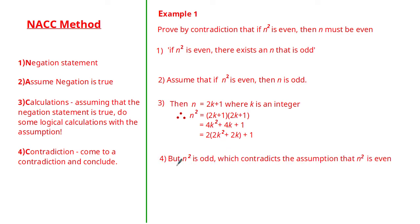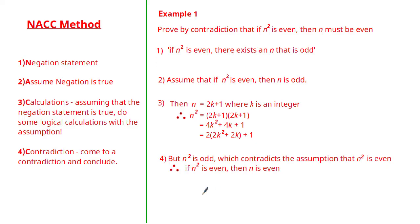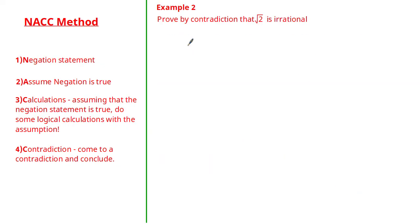This is where we reach our contradiction: if n squared is odd, this contradicts the assumption that n squared is even. Therefore we cannot go with the negation — we must go with the original statement. Therefore, if n squared is even, then n is even.